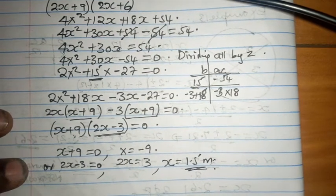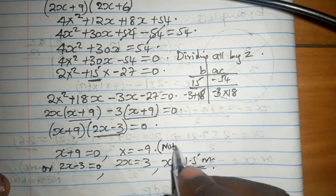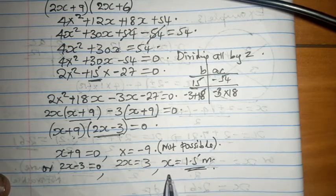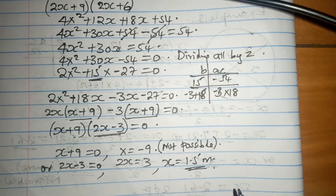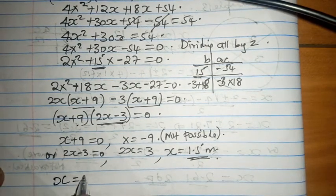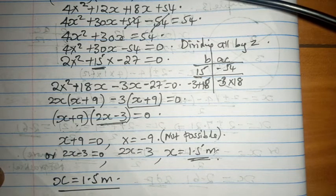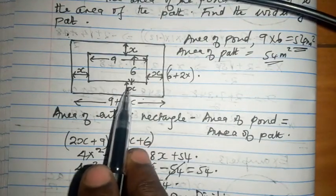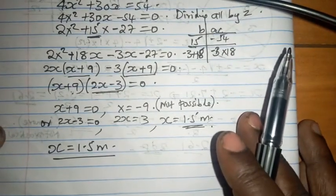And of course, because we are talking about dimensions and length and width of the path, this one is not possible, it is not practical. So the only possible value of X is 1.5. This is 1.5 meters. So we can conclude and say X equals 1.5 meters, and that becomes the width of the path, which is represented in the diagram as uniform width.